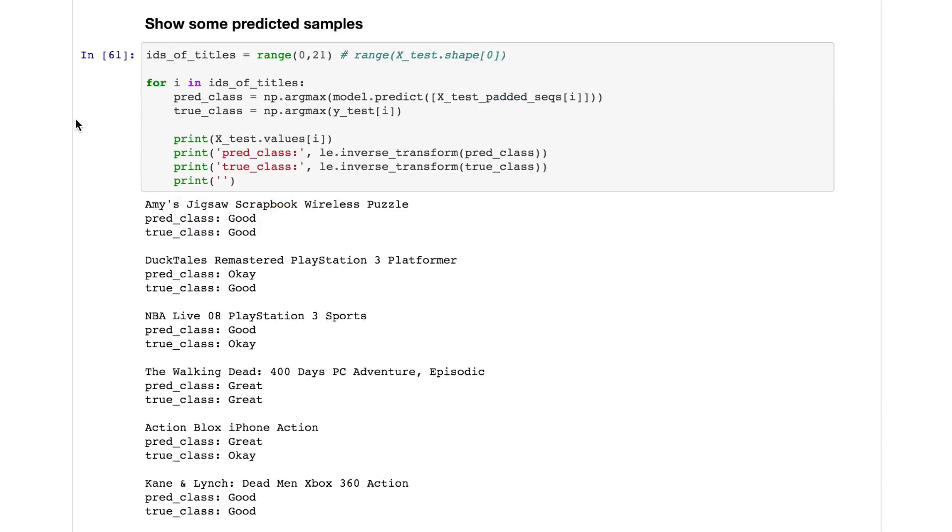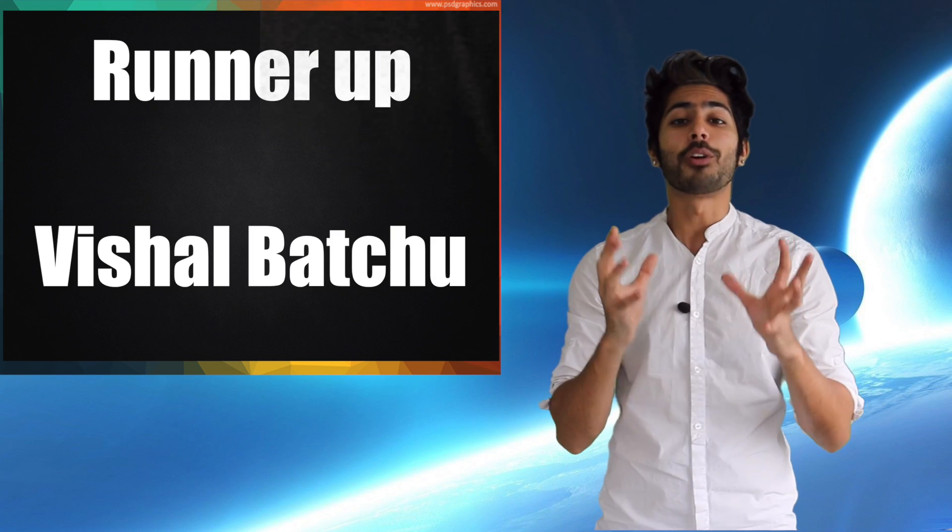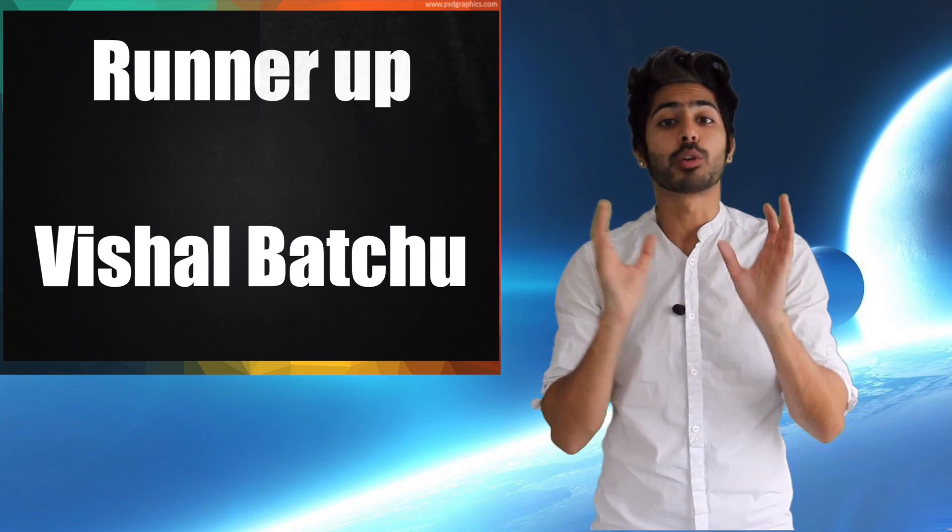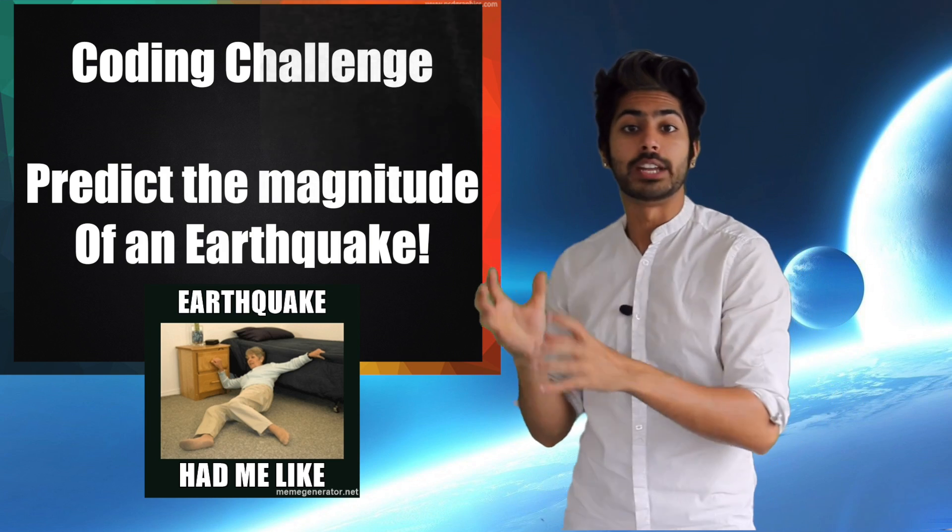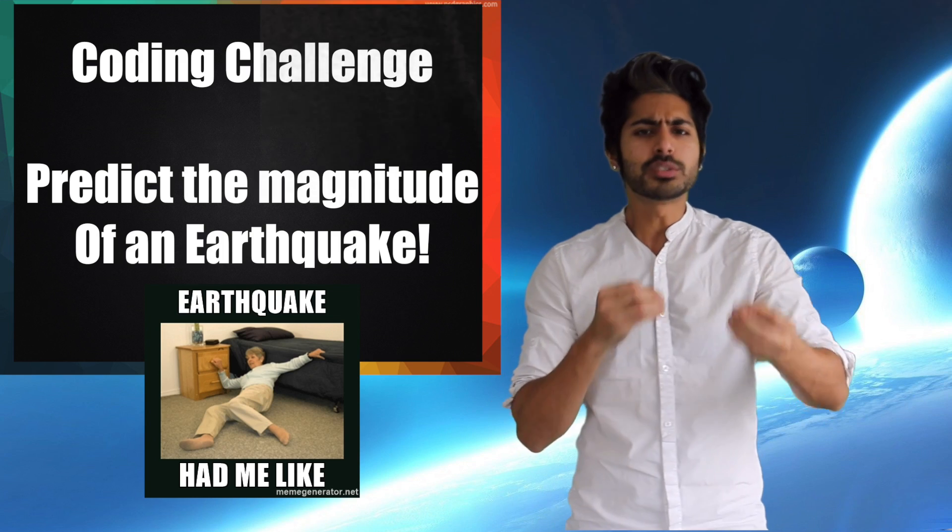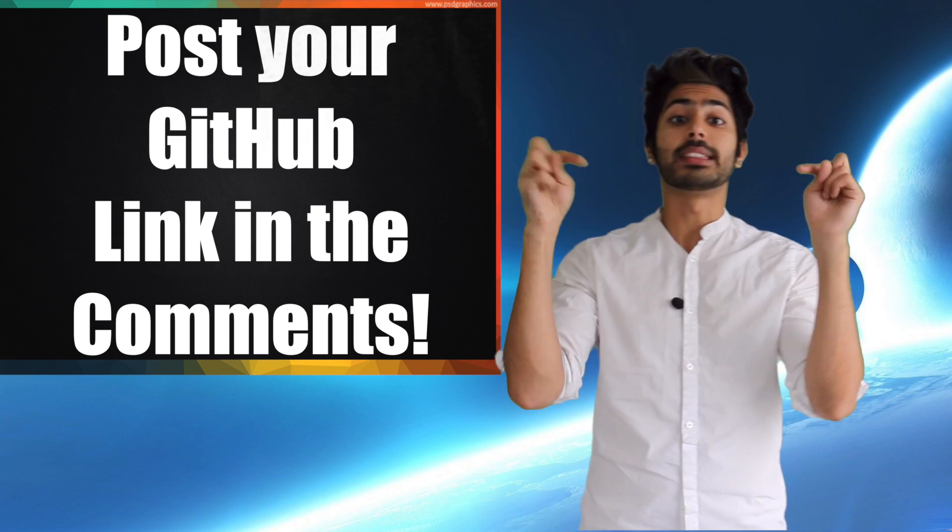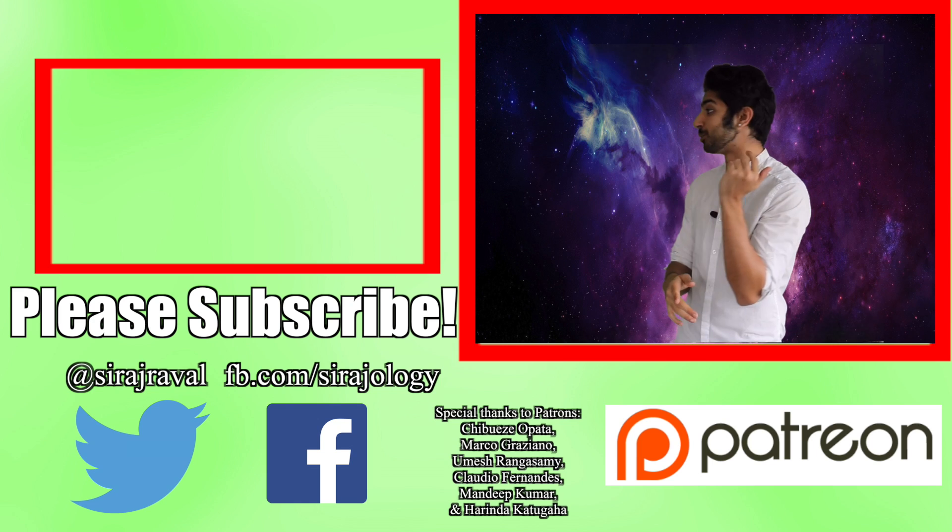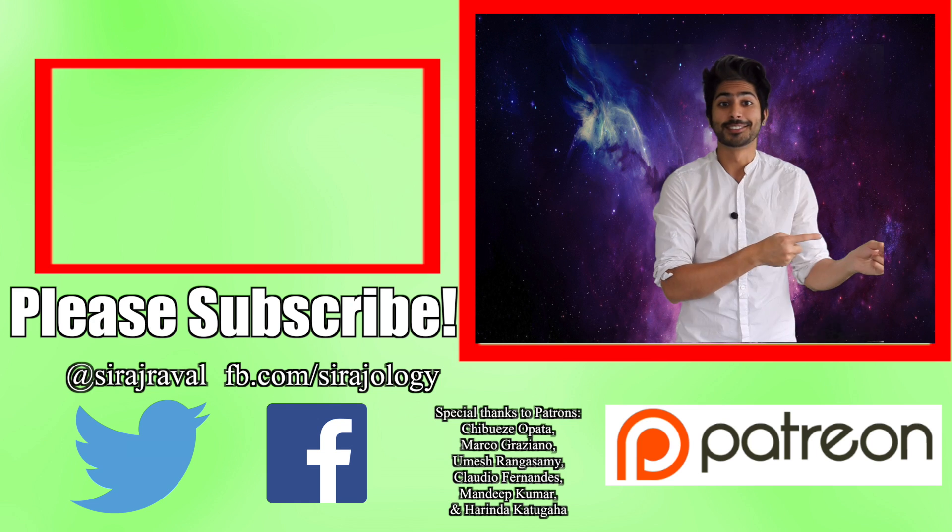The coding challenge winner from the last video is Jovian Lin. Jovian tried out a bunch of different models to predict sentiment from a dataset of video game reviews. Wizard of the week. And the runner-up is Vishal Baciu. He tested out several different recurrent nets and eloquently recorded his experiments in his readme. The coding challenge for this video is to train a deep neural net to predict the magnitude of an earthquake and use a strategy to learn the optimal hyperparameters. Details are in the readme, post your github link in the comments, and I'll announce the winner next video. Please subscribe if you want to see more videos like this, check out this related video, and for now, I gotta get my math turned up to a million, so thanks for watching.